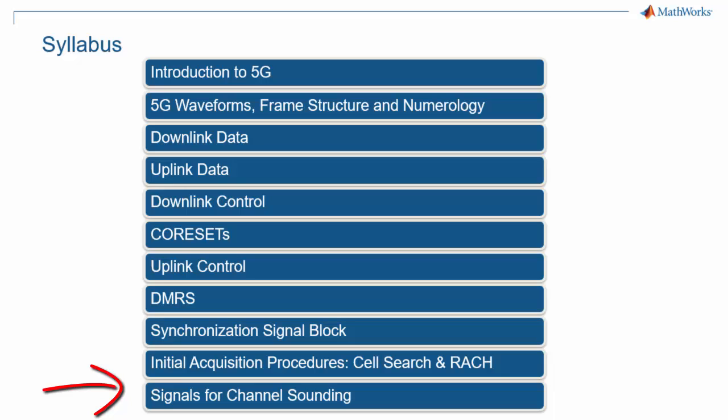At millimeter wave, propagation loss is higher and antenna arrays are needed to establish a high enough SNR for a link to be possible. To help with channel sounding, specific signals were designed.